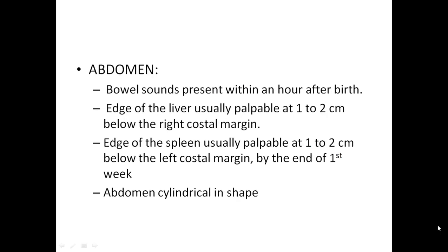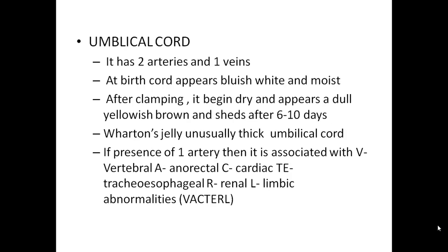Abdomen. Bowel sounds are present within one hour after birth. The edge of the liver is usually palpable 1 to 2 cm below the right costal margin. The edge of the spleen is usually palpable 1 to 2 cm below the left costal margin by the end of the first week. The abdomen is cylindrical in shape. The umbilical cord has two arteries and one vein. At birth the cord appears bluish white and moist; after clamping it begins to dry, appearing dull yellowish brown, and sheds after 6 to 10 days. Wharton's jelly is usually thick around the umbilical cord. If only one artery is present, it is associated with VACTERL anomalies: Vertebral, Anorectal, Cardiac, Tracheo-Esophageal, Renal, and Limb abnormalities.